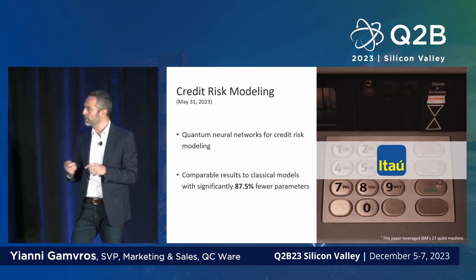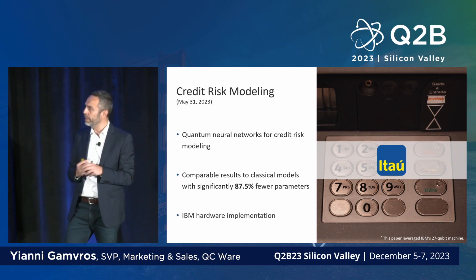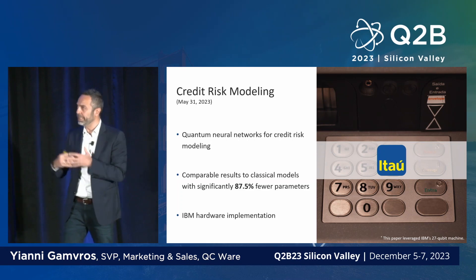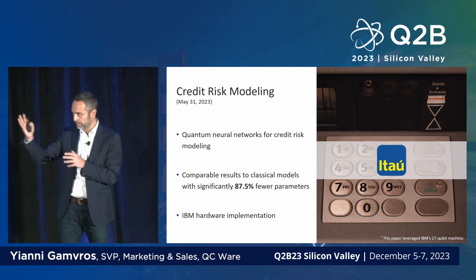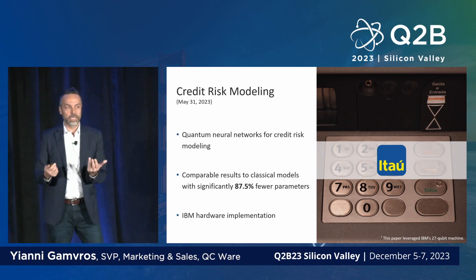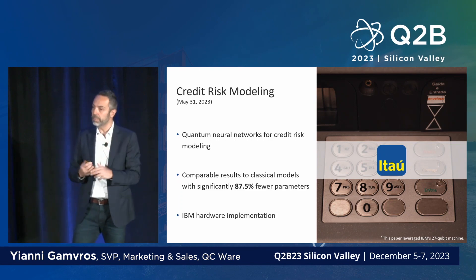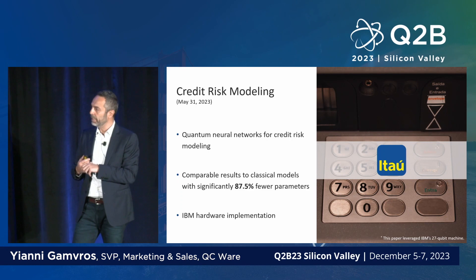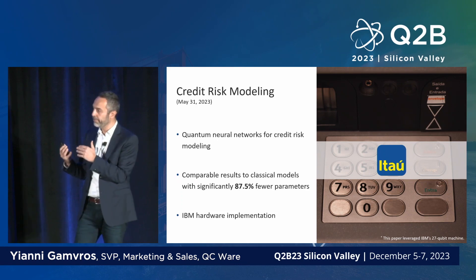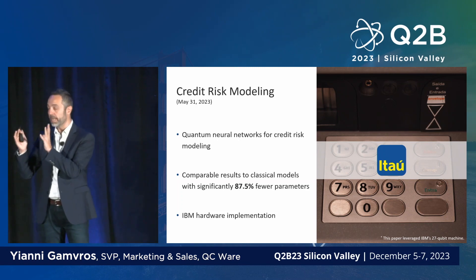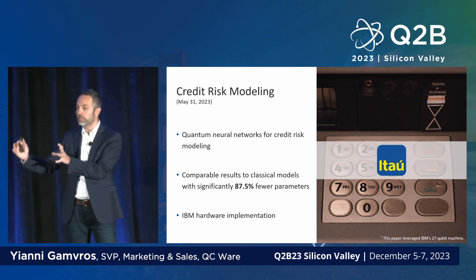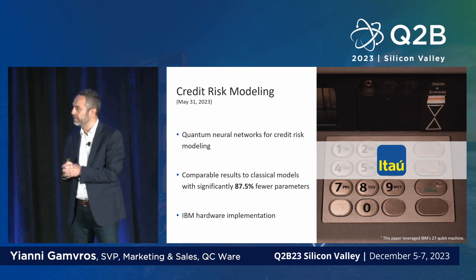Another banking customer is Itaú Unibanco, the largest bank in Latin America. We worked with their retail division on credit risk modeling, published in late May, looking at how to classify individual credit and lending risk using quantum neural network techniques. Again, we achieved results very similar to classical approaches but with vastly fewer parameters, meaning faster training and smaller, more interpretable networks.